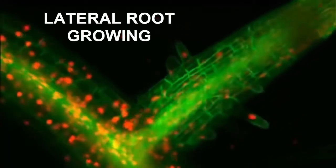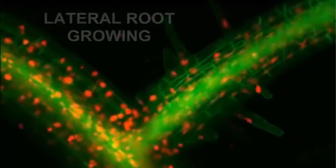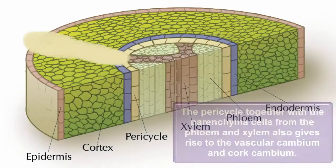The pericycle also contributes to the development of the vascular cambium. Recall that it is a meristematic region that allows secondary growth.